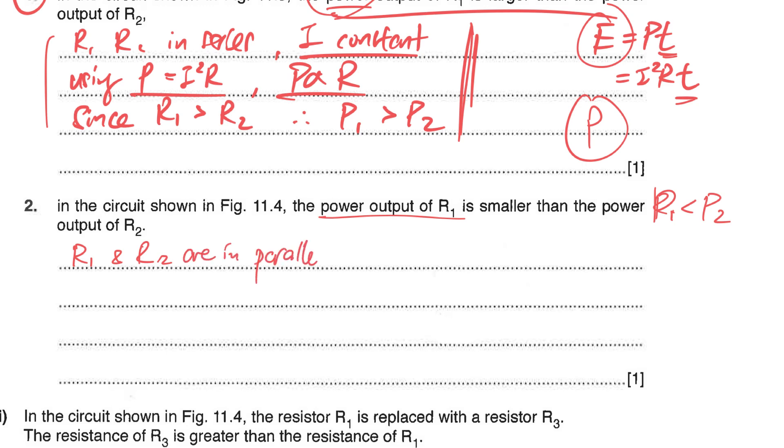So once again we state that since R1 and R2 are connected in parallel, so the V1 is equals to the V2. That means your V is constant for both R1 and R2. State the relationship: I'm using power equals to V squared over R where V is constant.